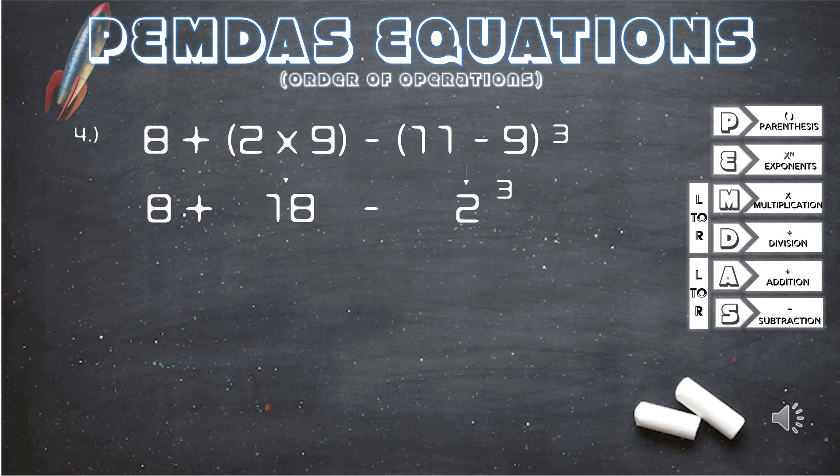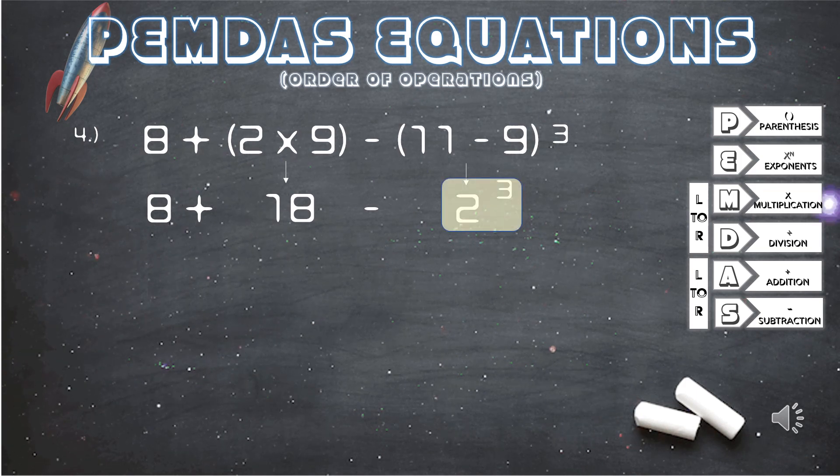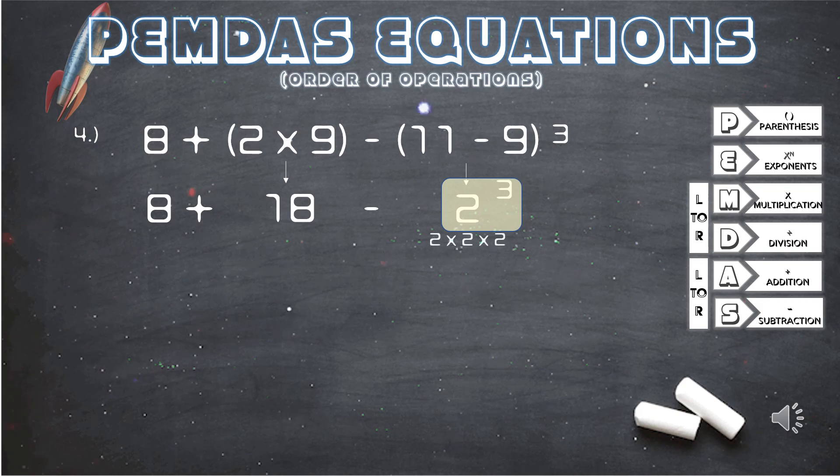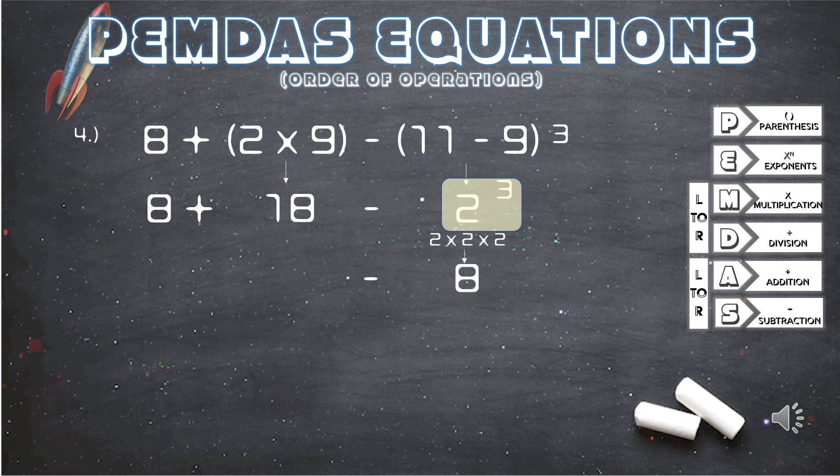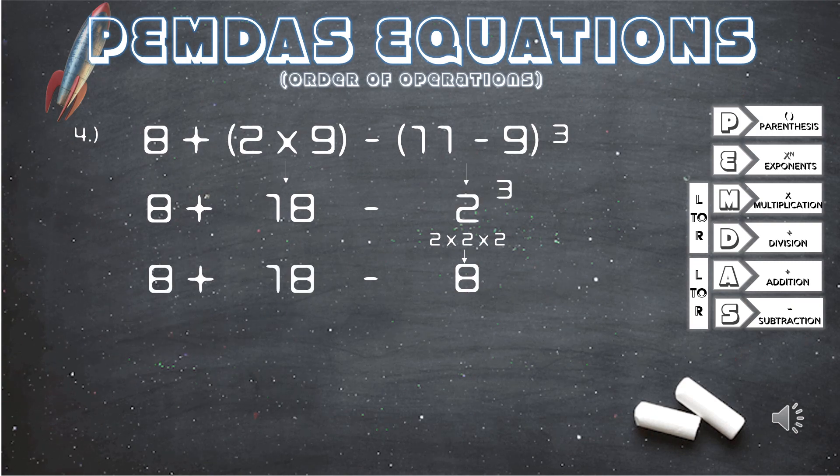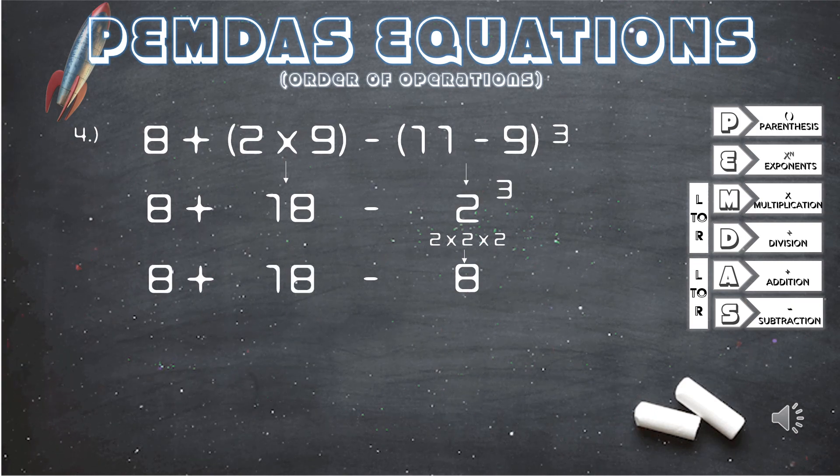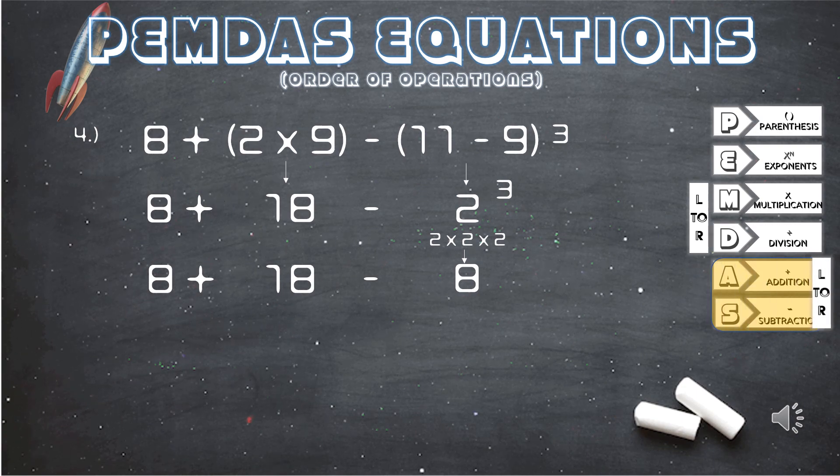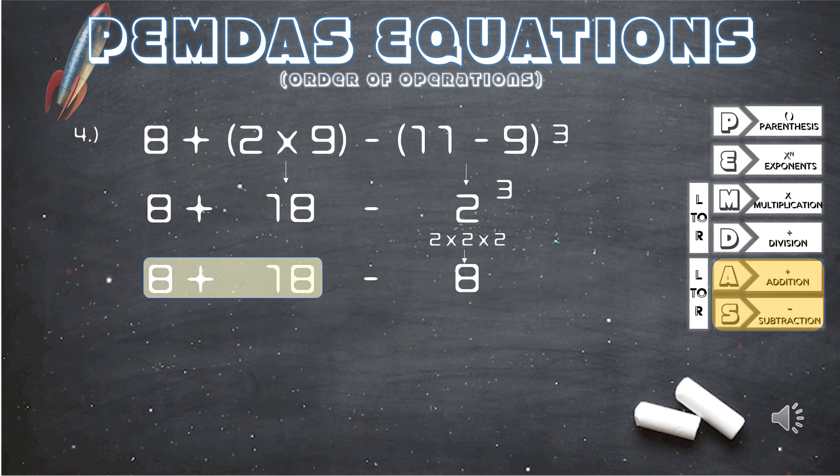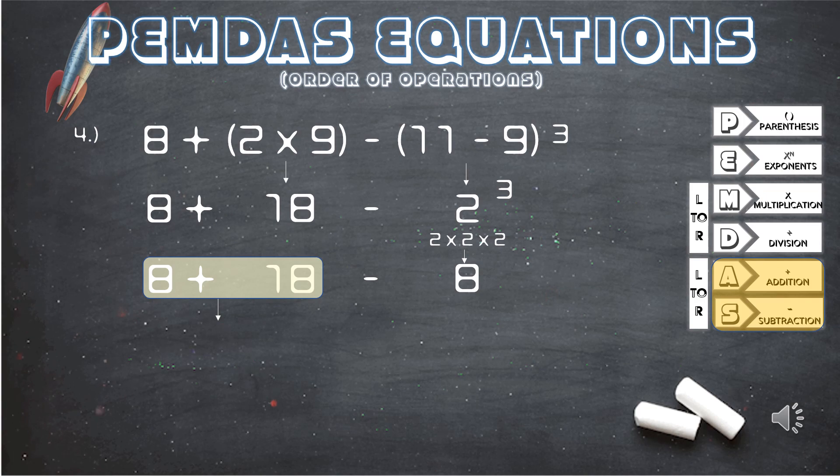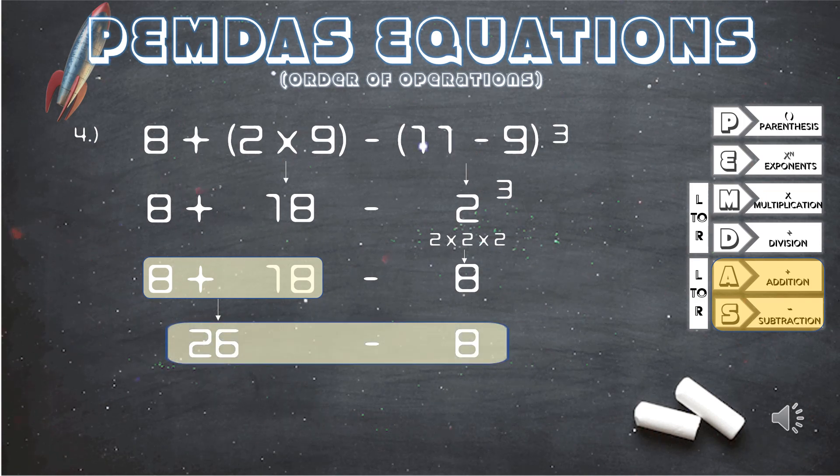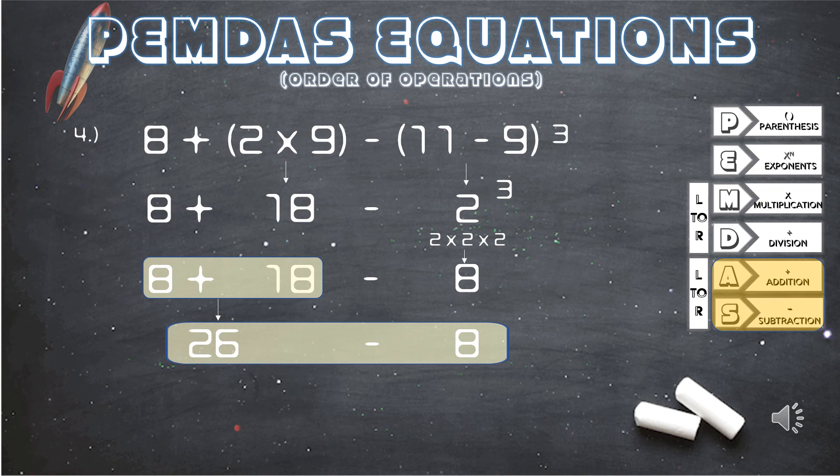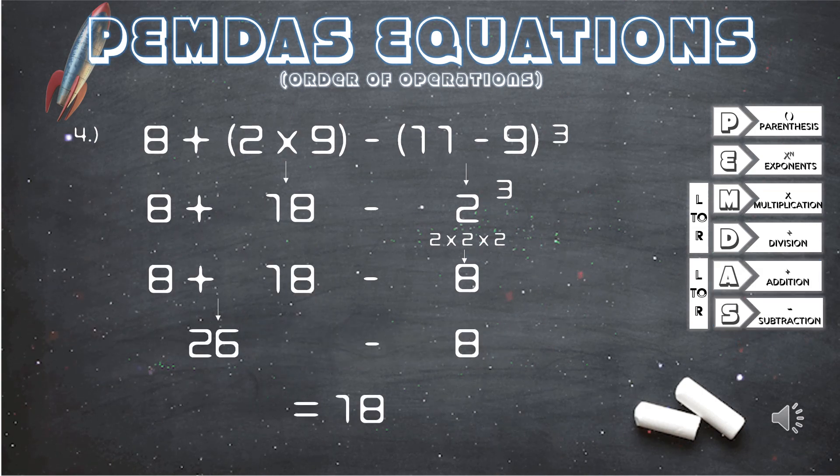Next, we solve the exponent 2 to the third power. 2 times 2 times 2, which equals 8. Bring down the rest of the equation, and since we have addition and subtraction, we will solve from left to right. 8 plus 18 equals 26. We bring down the 8, and we are left with 26 minus 8. And our answer is 18.